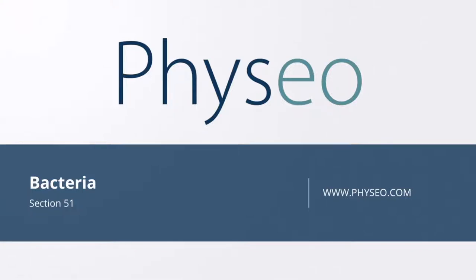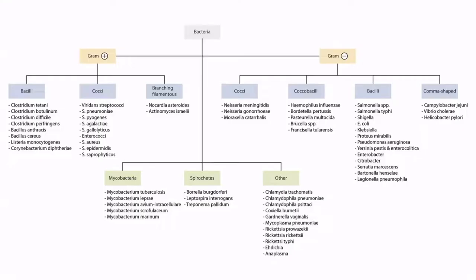Welcome to section 51 of Bacteria. This is our Bacteria overview figure, and in this video we will be discussing three species within the Rickettsia genus: Rickettsia rickettsii, Rickettsia prowazekii, and Rickettsia typhi, which you can see right here.